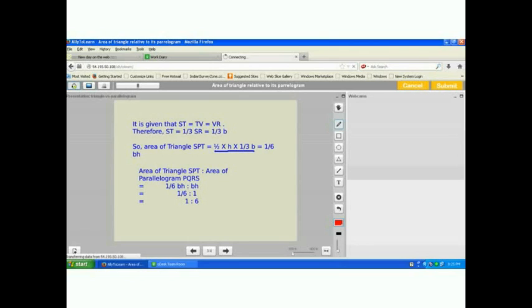We find out the ratio. Area of the triangle SPT to area of the parallelogram PQRS gives me one-sixth BH, and earlier we found that area of parallelogram is BH. We cancel out BH from both sides.